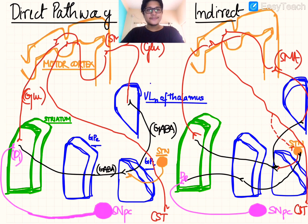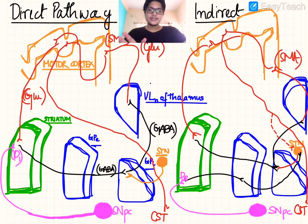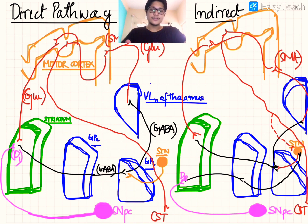The red arrows indicate all excitatory inputs and outputs, and the black arrows indicate inhibitory ones. Excitatory pathways in the CNS mainly involve the glutamate neurotransmitter — those are glutamatergic pathways — and inhibitory pathways involve GABA. Dopaminergic pathways can go either way; they can be excitatory via D1 receptors or inhibitory via D2 receptors.